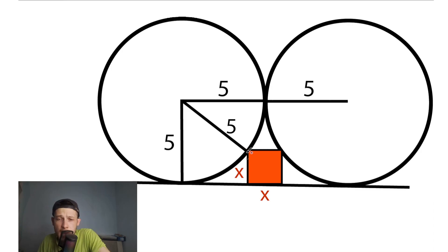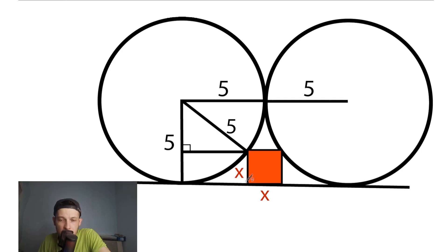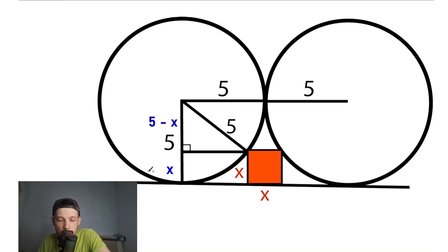For our calculation, let's call the side of this square x — this is a really important moment. So we have x here, and because of this square, we have x on both sides. Now let's draw this line with a right angle. If the side length is x, then this small part is also equal to x. Since the whole radius equals 5, this part equals 5 minus x.